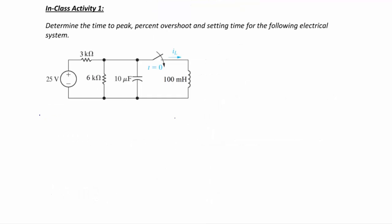Let's try an example. Determine the time to peak, percent overshoot, and settling time for an electrical system with a 25 V source, a 3 kΩ and 6 kΩ resistor, a 10 μF capacitor, and a 100 mH inductor. The switch closes at t = 0, so we redraw the circuit after the switch closes.